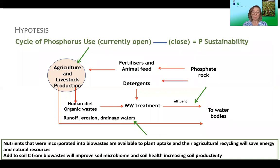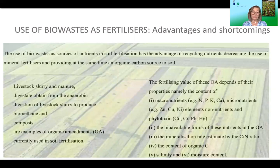The hypothesis of this work is that nutrients incorporated into bio-waste are available to plant uptake, and their agricultural use will save energy and natural resources. Adding organic carbon from bio-waste to soil will also improve the soil microbiome and soil health, consequently increasing soil productivity. We show the currently open cycle of phosphorus use and the need to close it through reuse and recycling of phosphorus incorporated into bio-waste, which also reduces the use of mineral fertilizers.